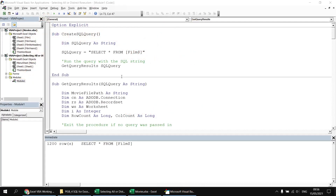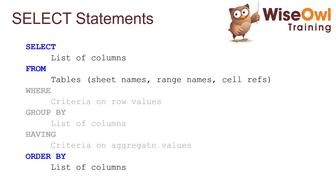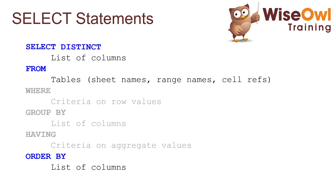Next, let's see how we can modify the way the SELECT statement works by adding an extra keyword after the word SELECT. We did this in the previous video using the TOP keyword - things like SELECT TOP 10 and SELECT TOP 10%. In this video, we're going to replace the TOP keyword with first the ALL keyword, and then the DISTINCT keyword.